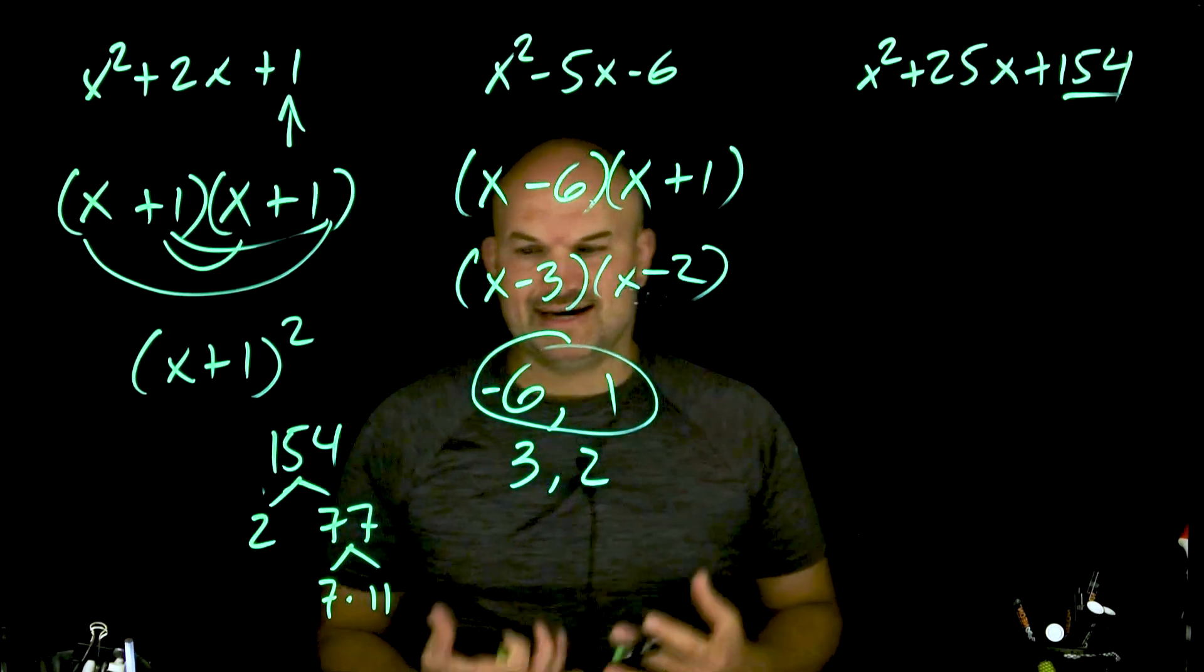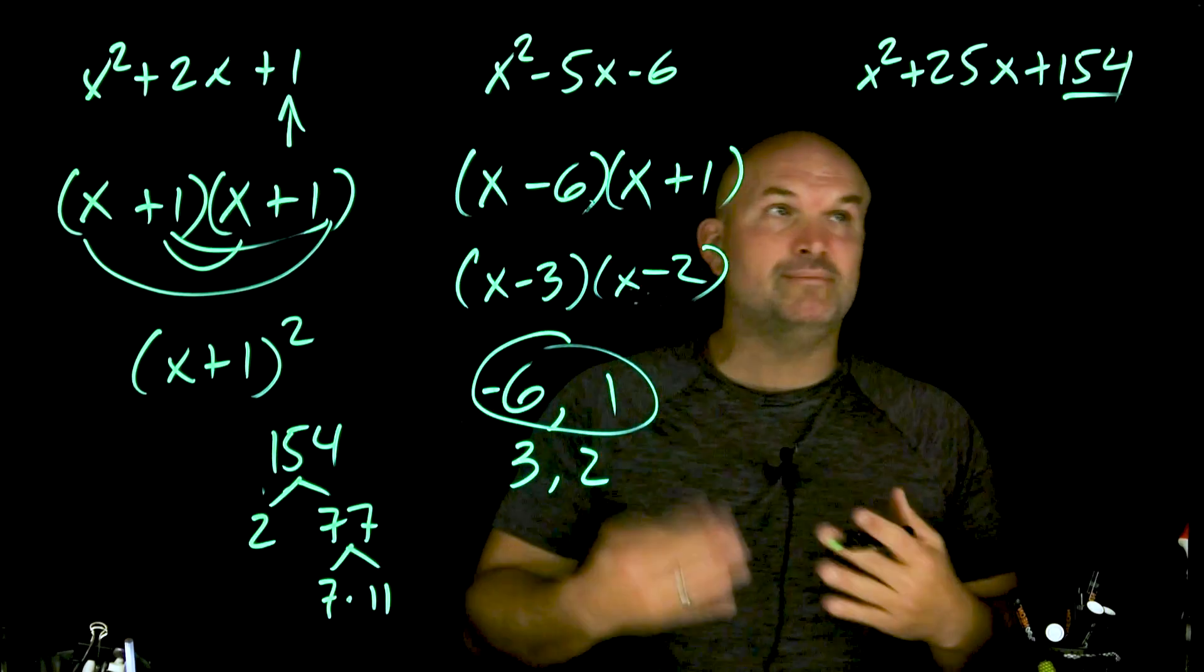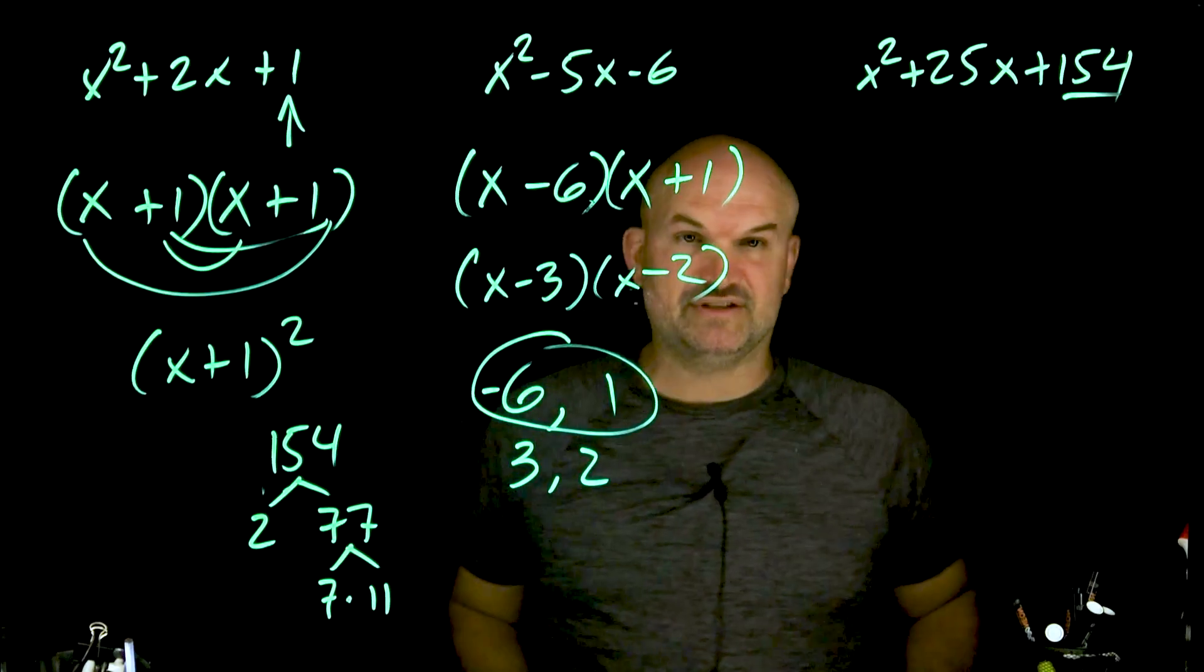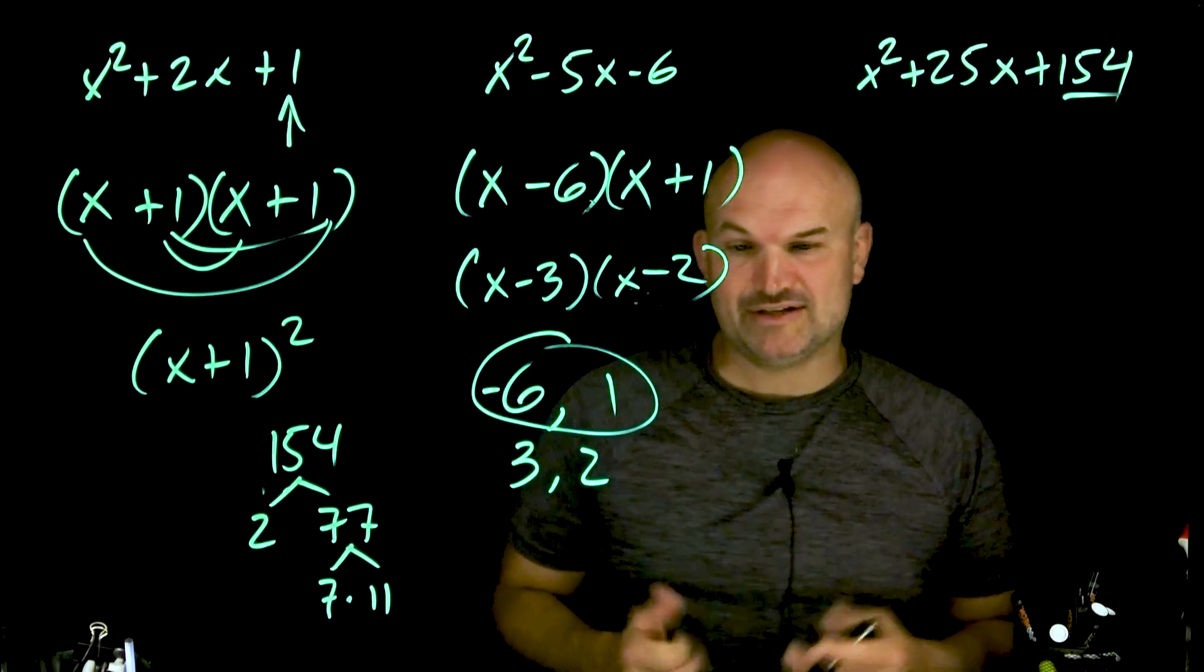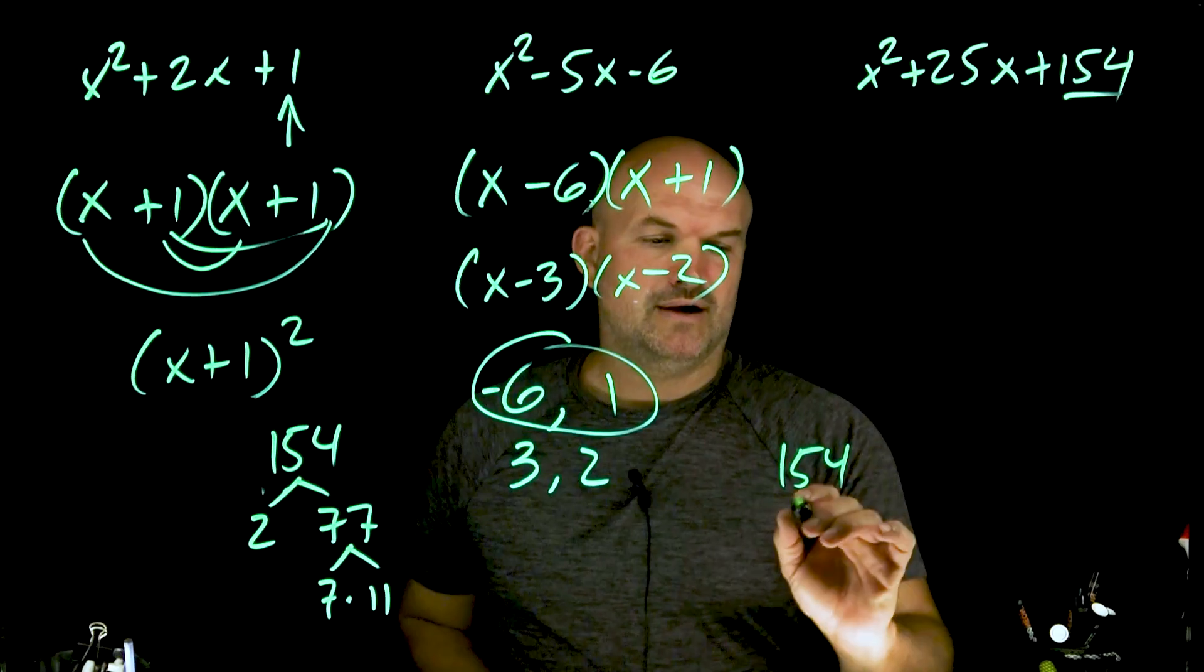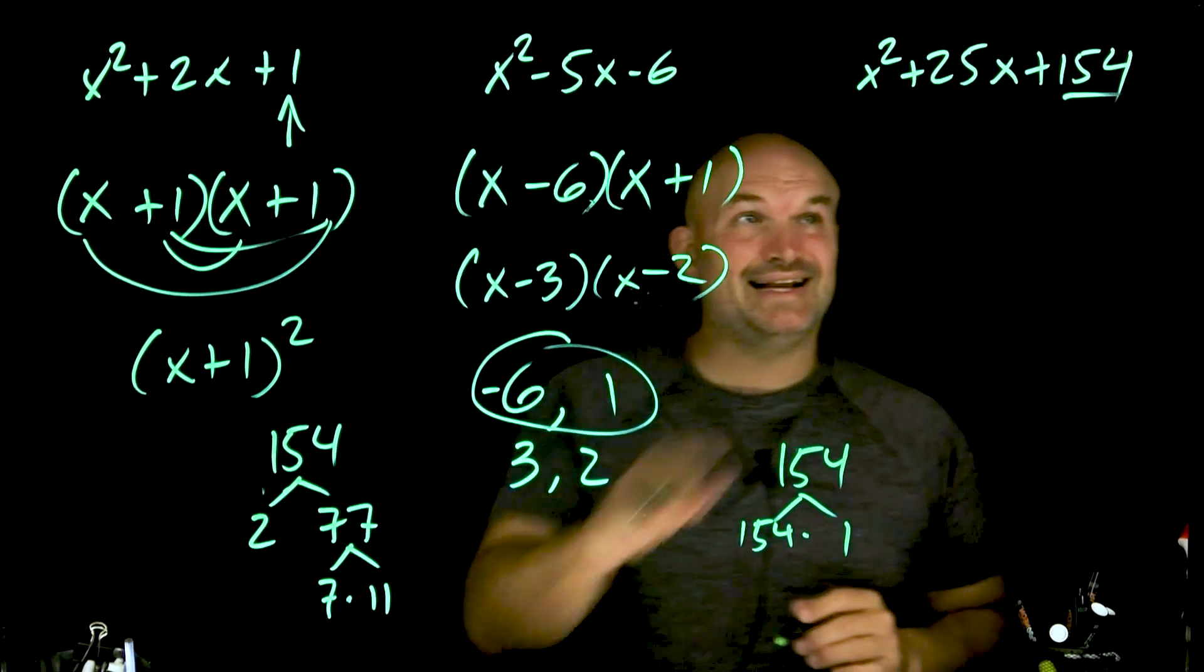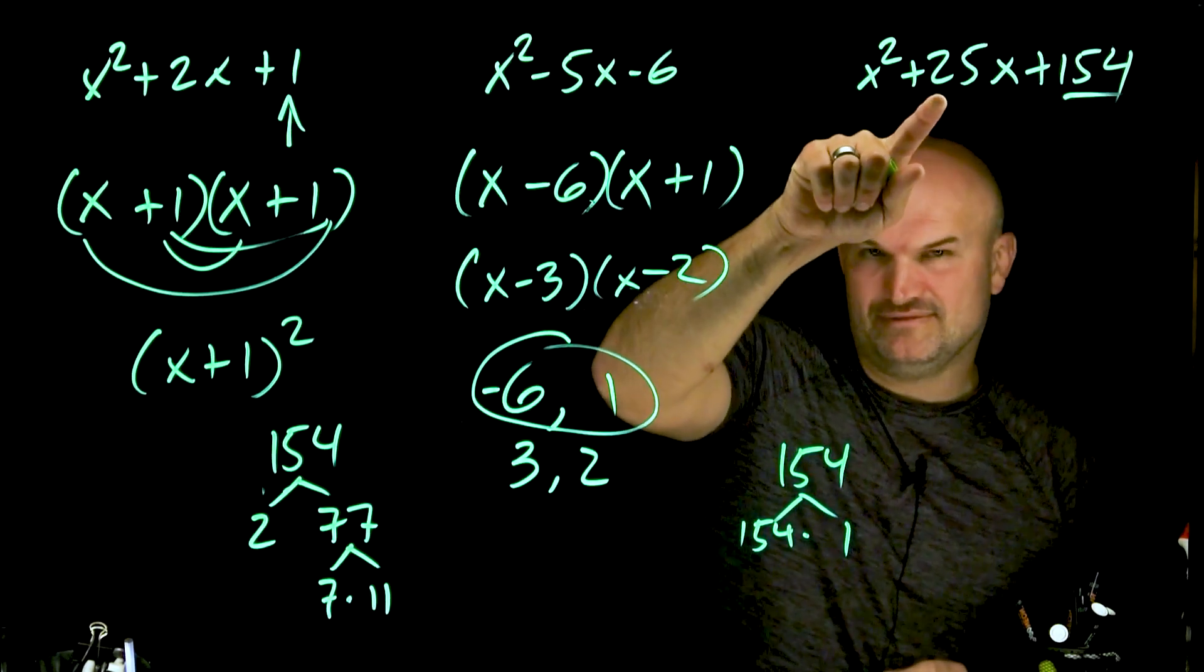The reason this is important is because I'm trying to identify what are all the numbers that evenly divide into 154. So now, ladies and gentlemen, I can create possible factors. For 154, I have 154 times 1. I'm looking for, does that add to 25? No.